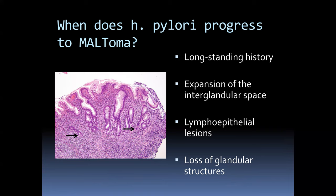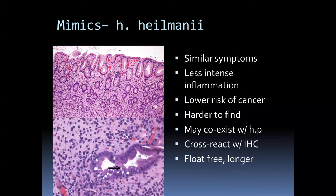Helicobacter is an important precursor lesion, and MALT lymphoma is one of the significant long-term consequences. MALT lymphoma usually requires a longstanding history. We think of MALT lymphoma when we begin to see expansion of interglandular spaces — not just superficial inflammation but spreading deeper, separating glands, seeing lymphoepithelial lesions (lymphocytes within the epithelial compartment of the stomach), and gland dropout.